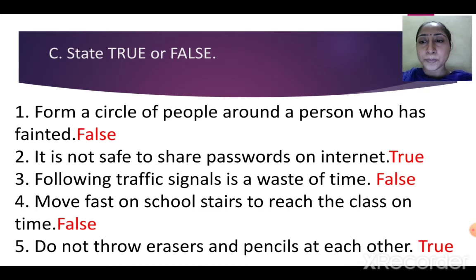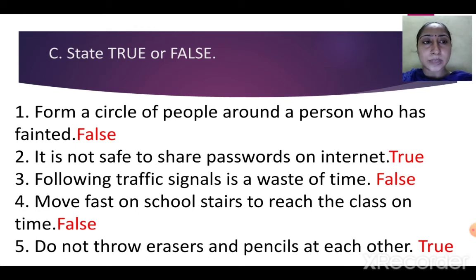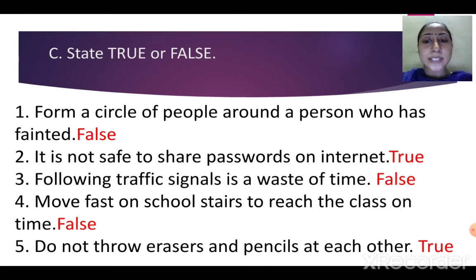Next exercise: true or false. First one: form a circle of people around a person who has fainted. If a person has fainted, should we crowd around that person? No — so it's false. Second one: it is not safe to share passwords on the internet — it's true. We should not share our passwords with anyone except our parents.